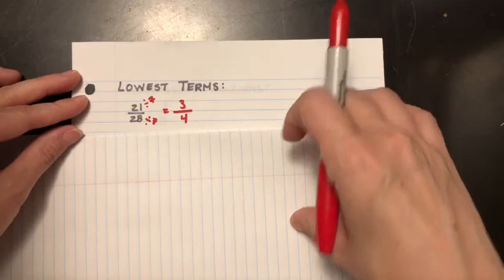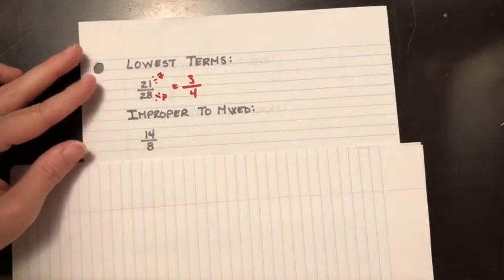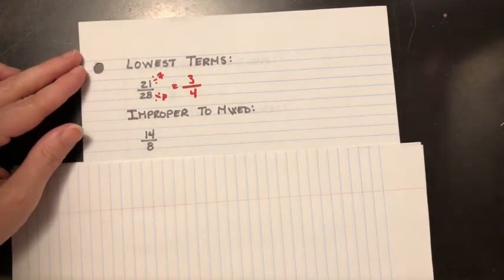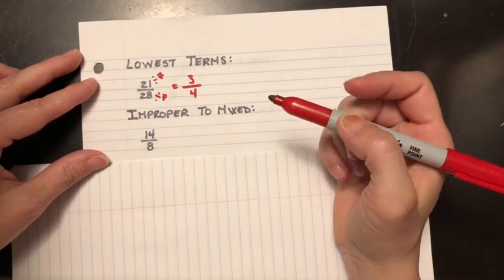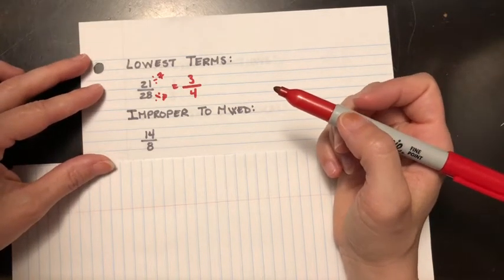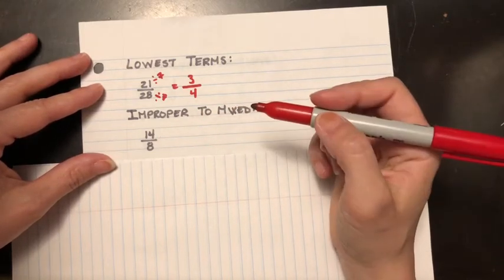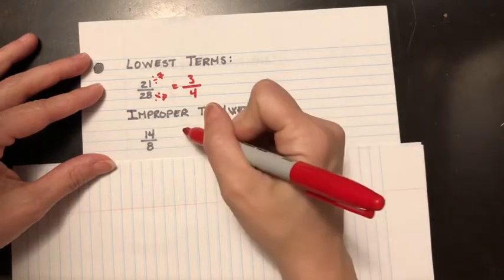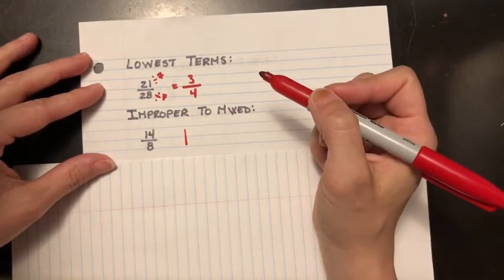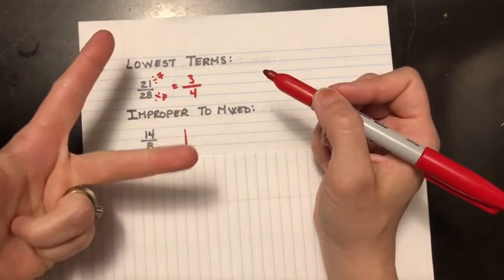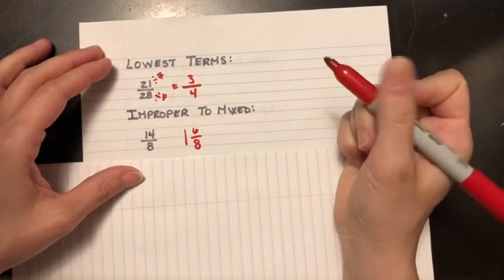All right, next skill: improper to mixed. Here we have an improper fraction. What makes it improper? The numerator is bigger than the denominator—the 14 is bigger than the 8. So I have to turn this into a mixed fraction. How many eights can I take out of 14? I think I can only take one eight out. If I remove 8 from 14, what am I left with? Let's see: 8, 9, 10, 11, 12, 13, 14—six. I got a 6 here.